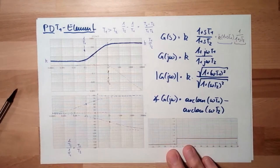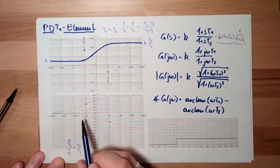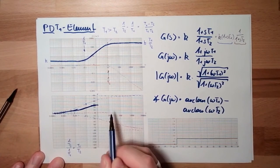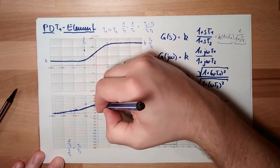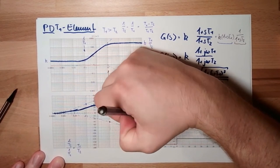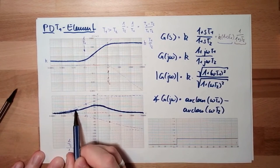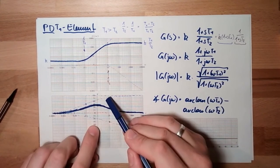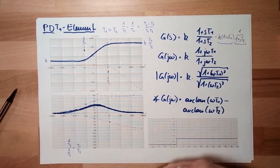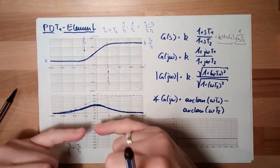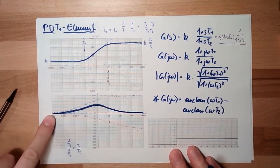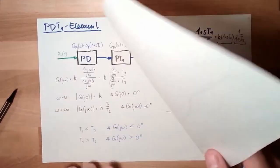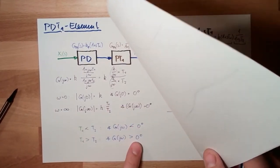In the Bode diagram, multiplication on a logarithmic scale is done by adding the two lines, and we add the two arguments. We end up with something that is bigger than zero degrees in between. At low frequencies we are at zero, and at high frequencies we are at zero — because here it's plus 90 degrees and here minus 90 degrees. And T1 is bigger than T2, so the argument is bigger than zero. Correct.